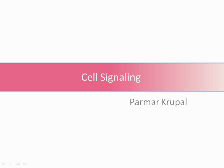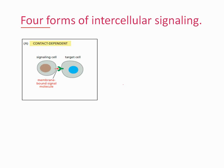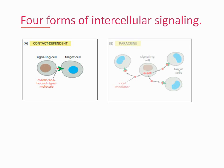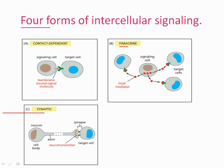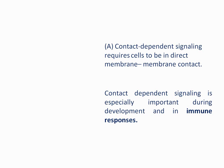Hi friends, welcome to Cruise Biology. Today we are going to discuss the types of intracellular signaling. There are four types: the first is contact dependent signaling, the second is paracrine or autocrine signaling, the third is synaptic signaling, and the fourth is endocrine signaling.